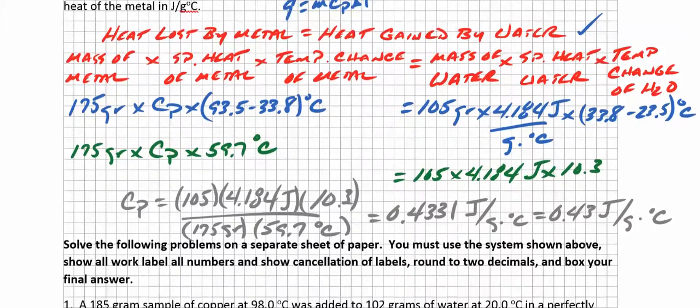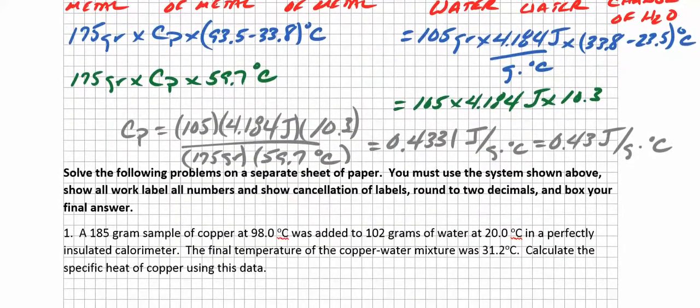Now we're going to do a little algebra. We're going to calculate the specific heat of the metal. We'll take 105 times 4.184 times 10.3, and we'll divide it by 175 and divide it again by 59.7. When we do that, we get 0.4331 joules per gram per degree Celsius. That's the unit for specific heat. We'll do a little rounding here. We get 0.43 joules per gram per degree Celsius, and that will do it for the sample problem.